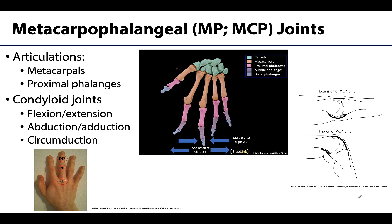Moving distally to the metacarpophalangeal joints — another name mercifully abbreviated, though not always standardized; sometimes you see MP joints, sometimes MCP joints. This is the articulation between the metacarpals and the proximal phalanges. If you're looking at your own hand, the MP joints are what we commonly call your knuckles. Metacarpophalangeal joints are condyloid joints, capable of flexion, extension, abduction, adduction, and of course circumduction.